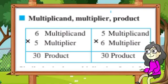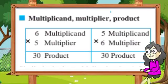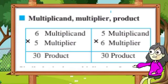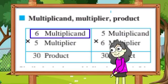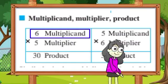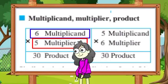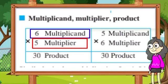Next: multiplicand, multiplier, product - mhanjej gunya, gunak aani gunakar. Ya baddal ata apan mahiti ghyenar aahot. Dileli udaharan madhe paha: 6 multiplied by 5. Saha gunile 5 dilelyat. 6 is the multiplicand - mhanjej saha he gunye aahe. 5 is the multiplier - 5 ha gunak aahe. Aani yenar uttar he product - mhanjej gunakaracha uttar aahe. In the multiplication 6 multiplied by 5, we multiply the first number 6 - it is the multiplicand.